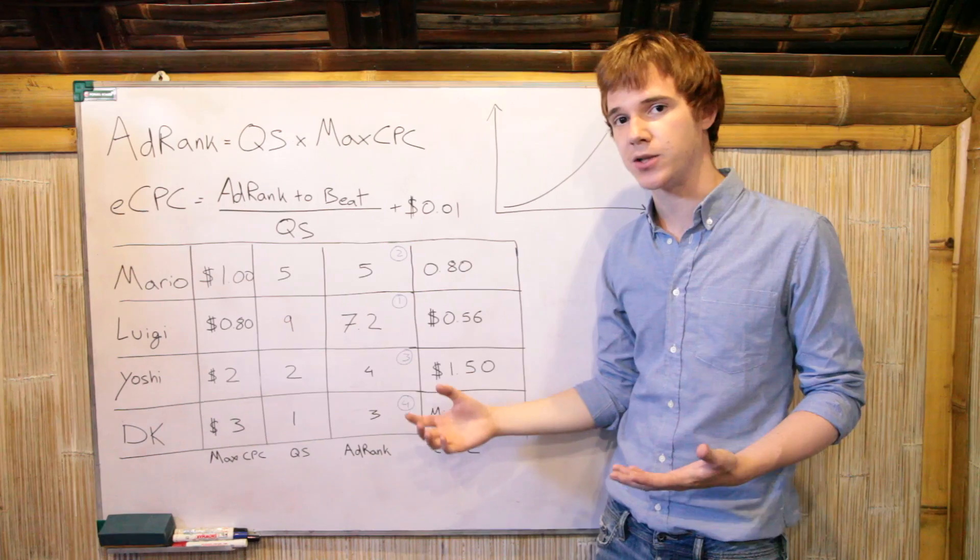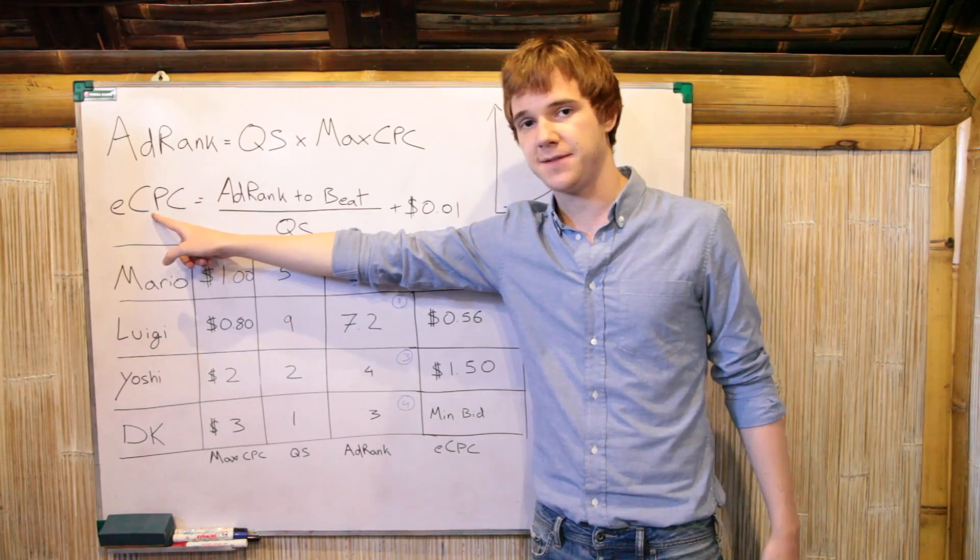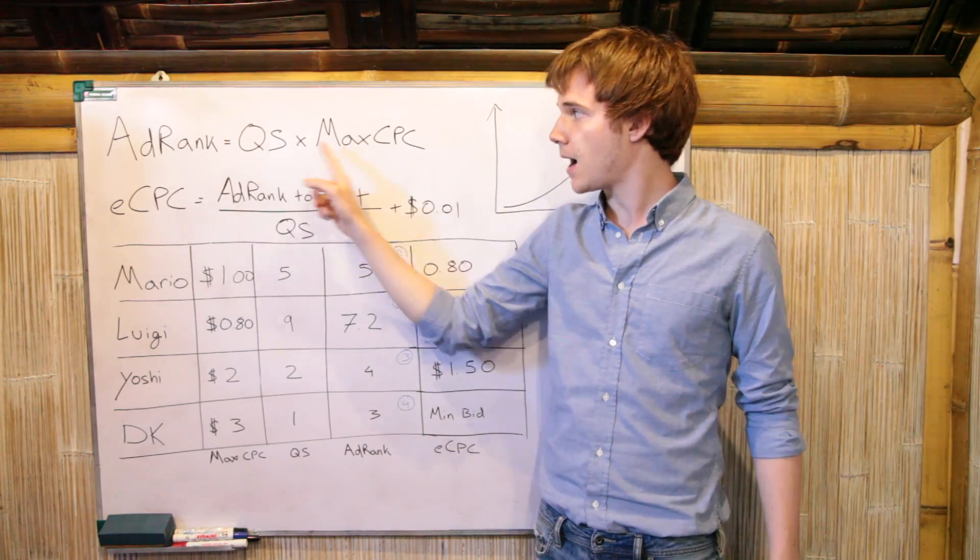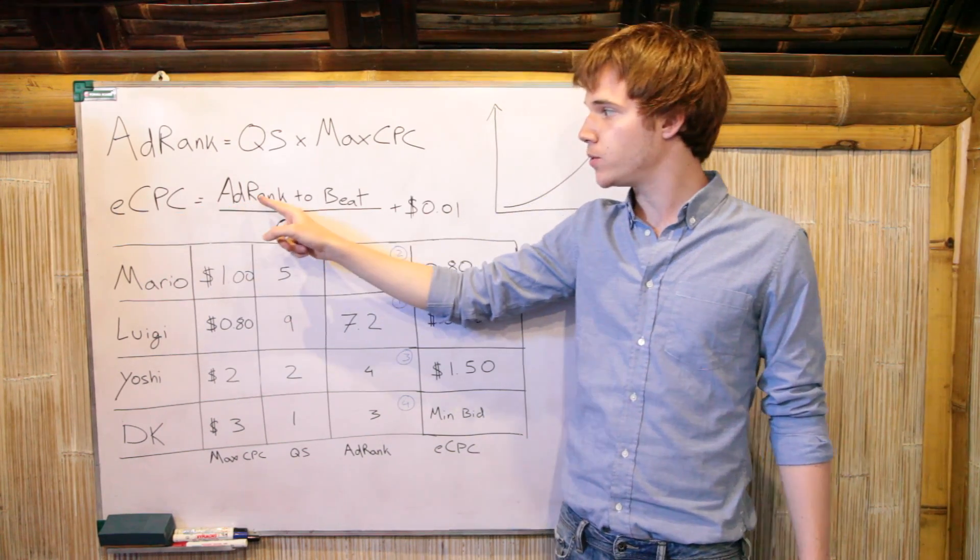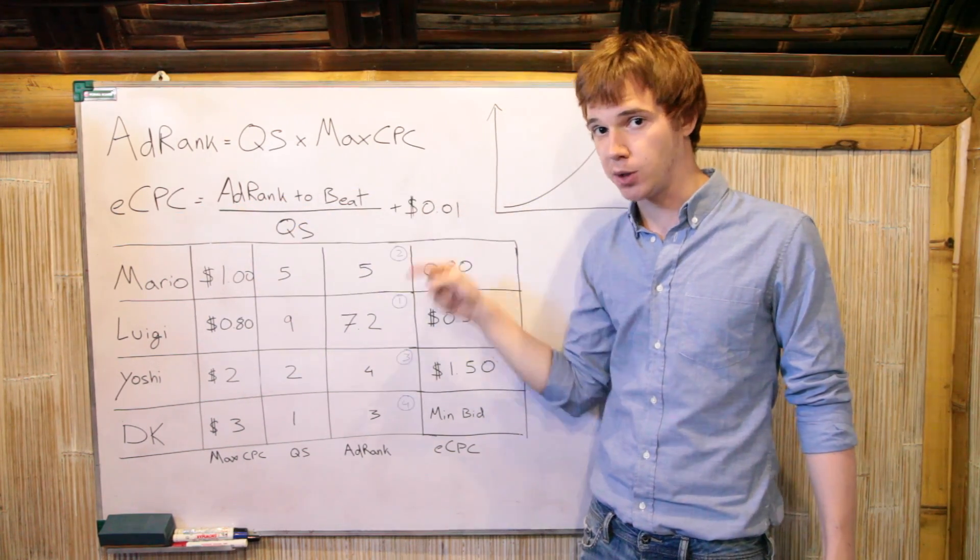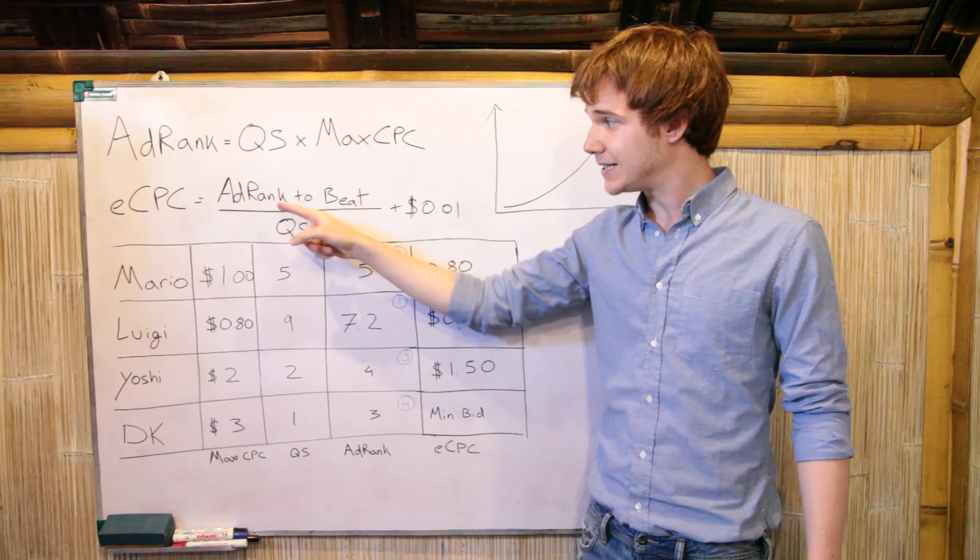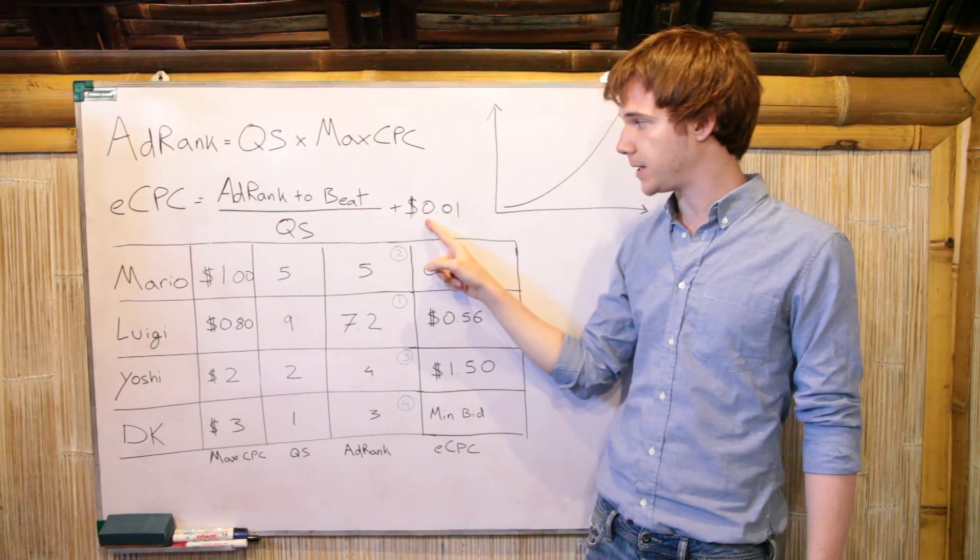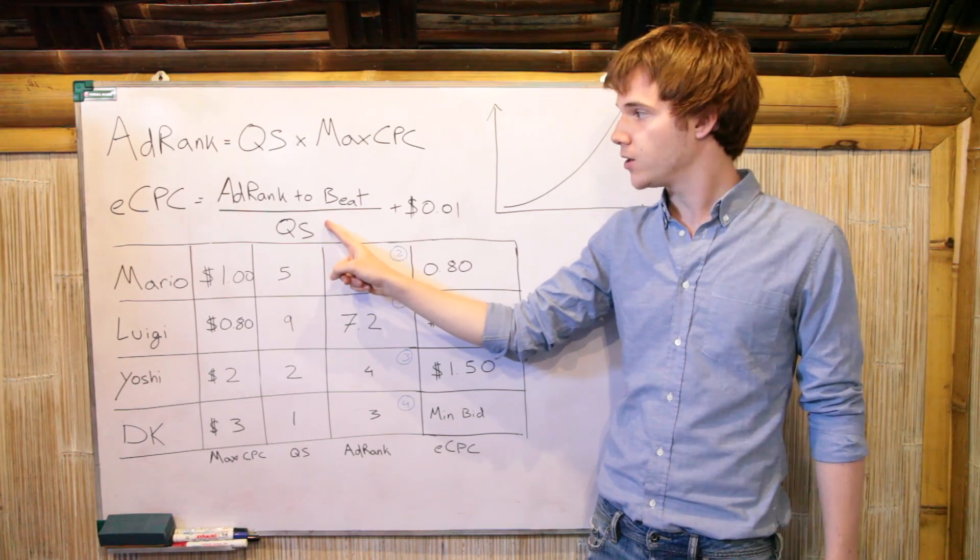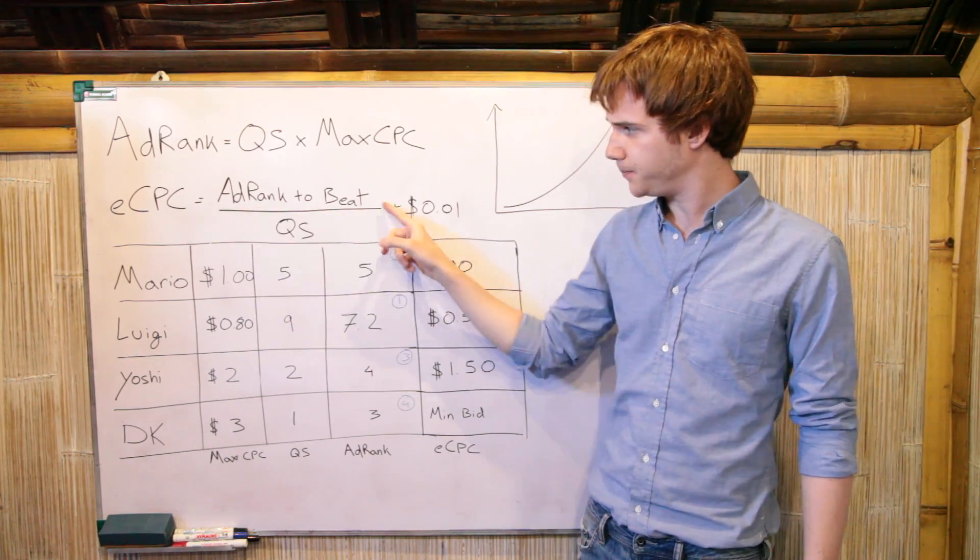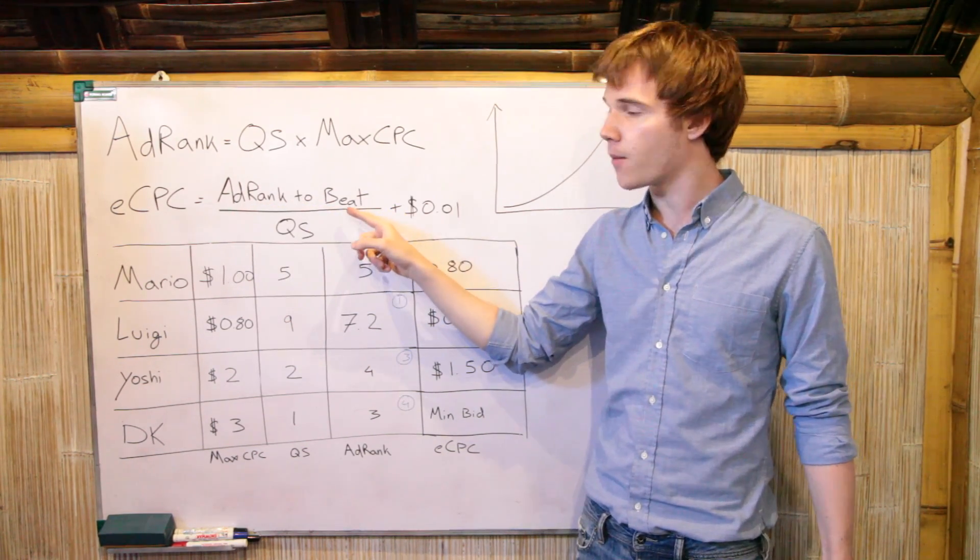And then this is where it gets really interesting. The effective CPC, so what this means is not how much you're willing to pay, but how much you're actually going to pay, is equal to the AdRank of the advertiser below you that you have to beat, divided by your quality score, plus one cent. So what this means is that if your quality score is really, really high, you're going to divide far more, meaning your eCPC is going to be way lower.